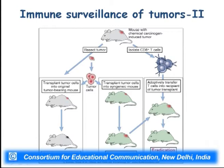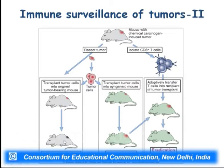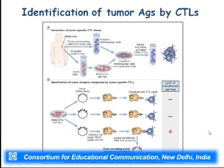For immune surveillance of tumors: take a mouse, give it a chemical carcinogen, allow a tumor to form, isolate CD8 cells — called adoptive transfer — and transfer those cells that have already seen the tumor into another mouse with the same tumor. This eradicates the tumor. If you transplant the tumor into another tumor-bearing mouse, there is again no tumor growth because of tumor antigens and antibodies present. However, transplanting tumor cells into syngenic mice allows the tumor to grow.